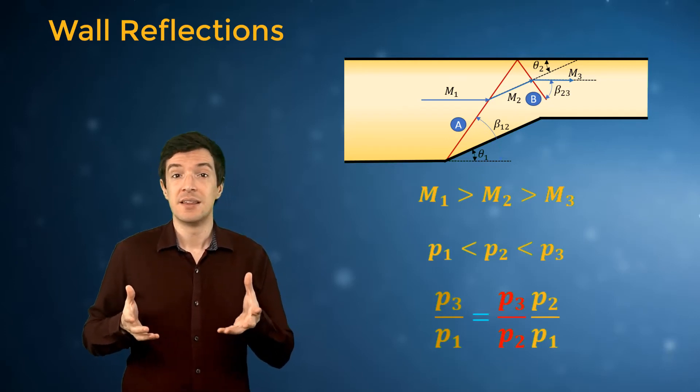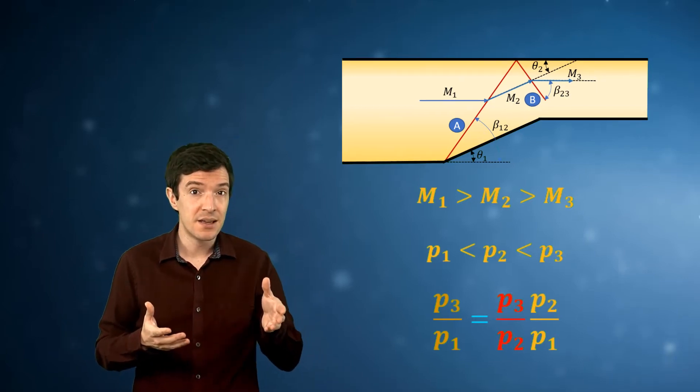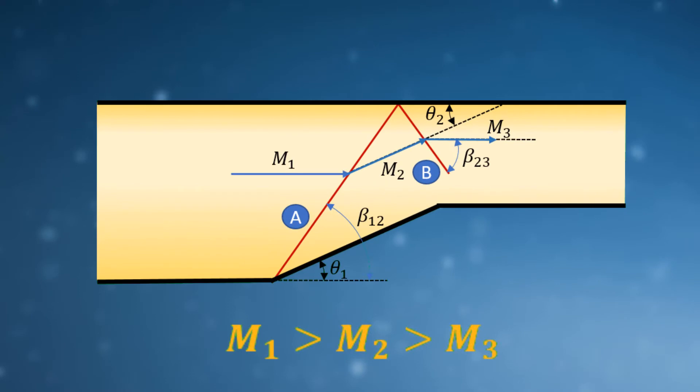Note that the variations across shock A and B, as well as the shock angles, will be different since the upstream Mach number is not the same. If the channel keeps converging, additional reflections will occur until a normal shock forms and the flow becomes subsonic.